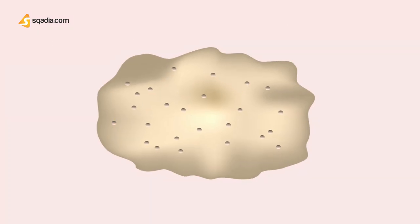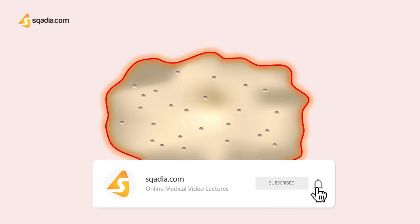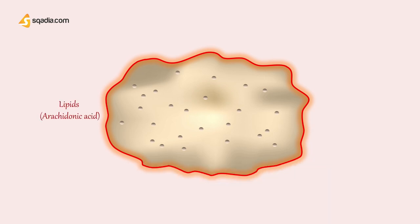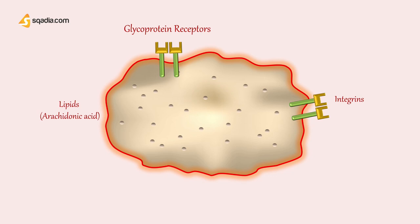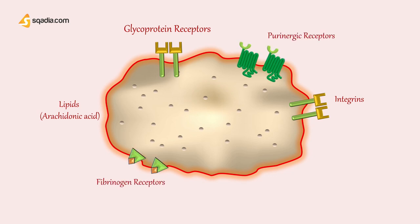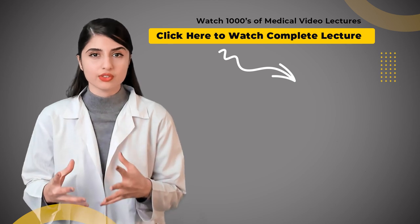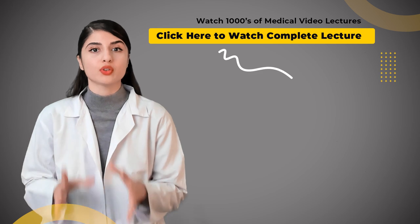Looking at the cell surface membrane, the platelet membrane contains a large amount of phospholipids that activate multiple stages in the blood clotting process, such as arachidonic acid. On the platelet cell surface, there is also a coat of glycoproteins. The receptors present on the platelet surface include glycoprotein receptors, integrins (also a type of glycoprotein), purinergic receptors, and fibrinogen receptors. We will come back to this diagram at the end when we have discussed the whole process. Now let's head on to the next sections to see what is actually happening in each of the steps of hemostasis, where vasoconstriction and primary hemostasis are taking place.